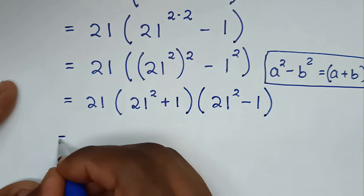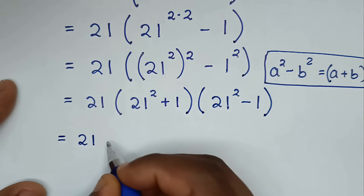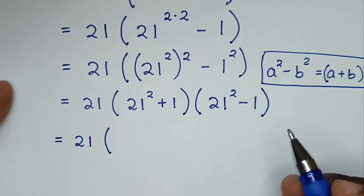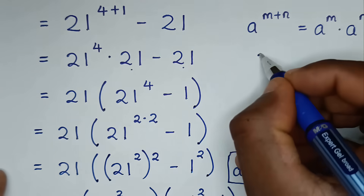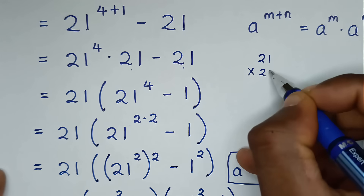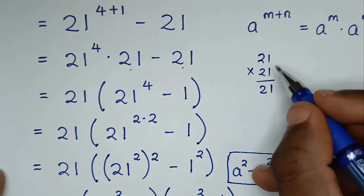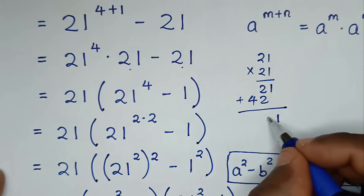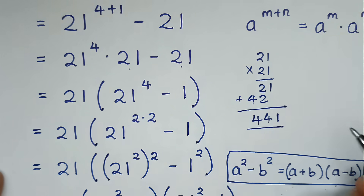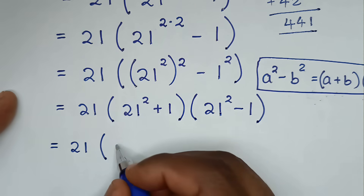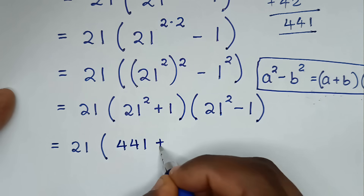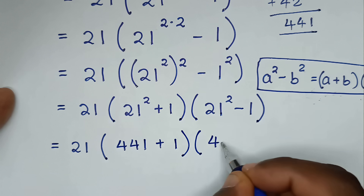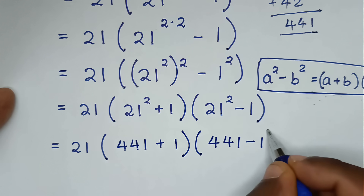In the next step, it will be 21, then bracket, and 21 squared — we calculate 21 times 21: 1 times 1 is 1, 1 times 2 is 2, 2 times 2 is 4, adding gives 441. So 21 squared is 441. We get 21 times (441 plus 1) times (441 minus 1).